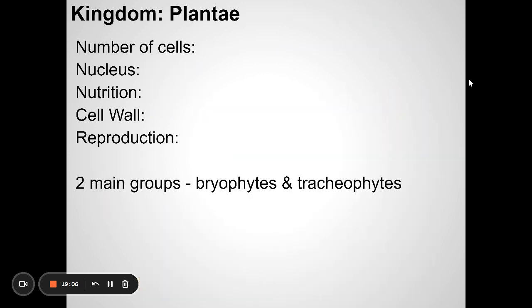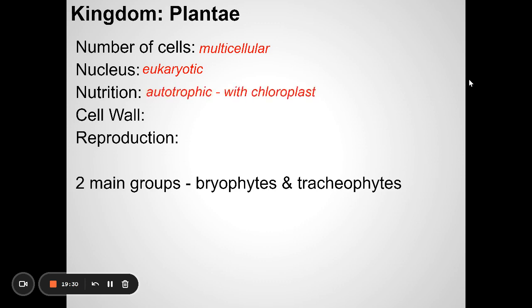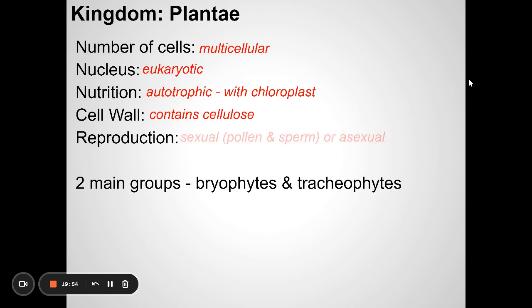Plants: how many cells? Multicellular. Prokaryote or eukaryote? They do have a nucleus, so eukaryote. Autotroph or heterotroph? Autotroph — correct. They have chloroplasts that capture the sun's energy and use it to make their own carbohydrates. They do have a cell wall made of cellulose. Do they reproduce sexually or asexually? Both.